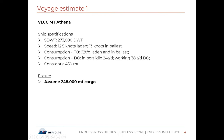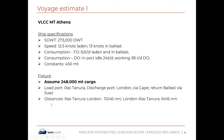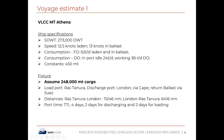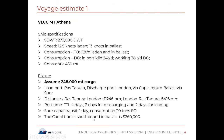Fixture: assume 248,000 metric tons of cargo. Load port is Ras Tanura; discharge port is London. The loaded leg is from Ras Tanura to London via Cape, and return ballast via the Suez Canal. Distance Ras Tanura to London is 11,246 nautical miles; London to Ras Tanura is 6,416 nautical miles. Port time is four days total — two days loading and two days discharging. Suez Canal transit is one day, consuming 20 tons of fuel oil. Canal transit southbound in ballast costs $260,000. Port costs: $70,000 at load port and $180,000 at discharge port.